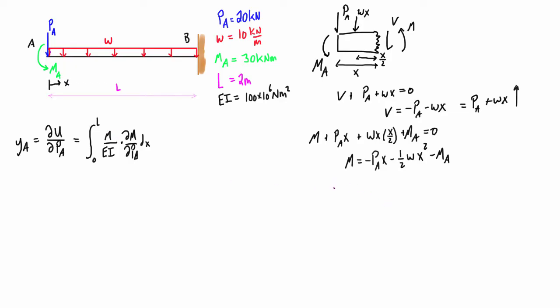We also need to take the partial derivative of this, so we have delta m over delta Pa. We take the partial derivative with respect to the point load that we're checking the deflection at.